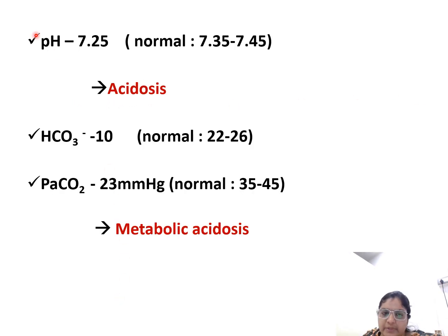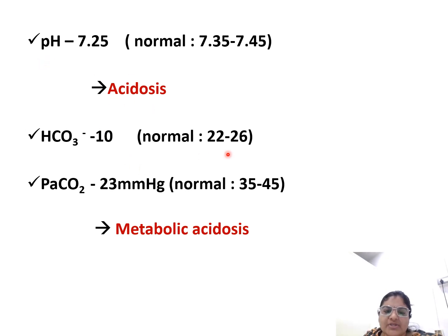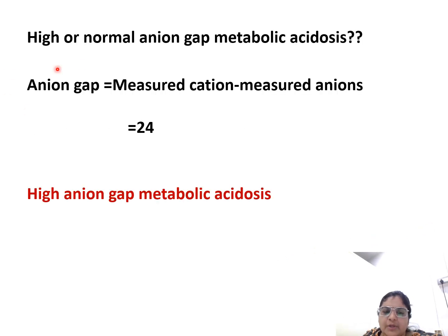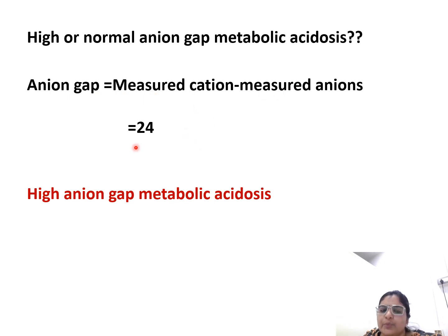Now for ABG interpretation: the pH is 7.25, so it is acidosis. Bicarbonate is 10 (normal is 20 to 26) and pCO2 is 23, so this is a case of metabolic acidosis. We now check whether it is high or normal anion gap. The anion gap is measured cation minus measured anion, which comes to around 24 in this case — so it is a high anion gap metabolic acidosis.